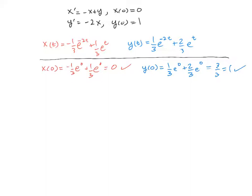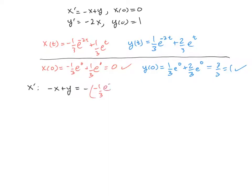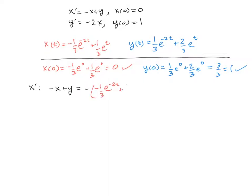So now let's verify the differential equations. For x prime, we're going to start with the right-hand side, which is more complicated, and substitute in our solutions. So we have negative times the x, which is negative 1/3 e^(-2t) plus 1/3 e^t. And that's plus the y,